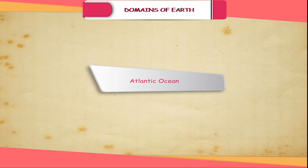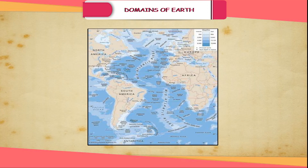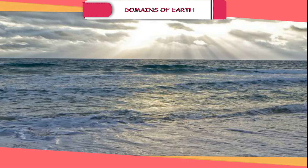Atlantic Ocean. This is the second largest ocean in the world and it resembles the shape of the letter S. It is bounded on the west by North America, on the east by Europe, and to the north it merges into the Arctic Ocean. This is the busiest ocean in the world. The coastline of the Atlantic Ocean is highly indented, and this irregular and indented coastline provides ideal locations for natural harbors and ports.